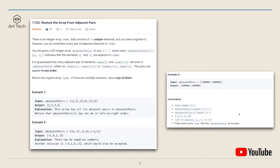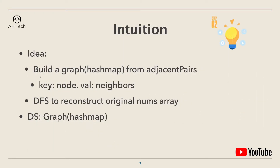Any intuition to solve this question? The first step is to build a graph data structure, which is a hash map from the adjacent pairs. In this hash map, the key will be every node or item in the nums array, and the value will be the left or right neighbor of that node. Next, we can use DFS to reconstruct the original nums array from the graph.